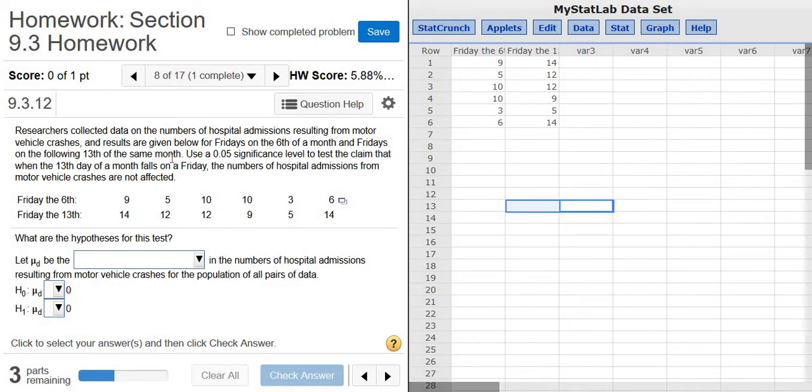In this problem, we're going to do a hypothesis test using paired data in StatCrunch. Researchers collected data on the numbers of hospital admissions resulting from motor vehicle crashes, and results are given below for Fridays on the 6th and Fridays on the 13th, using the same month.